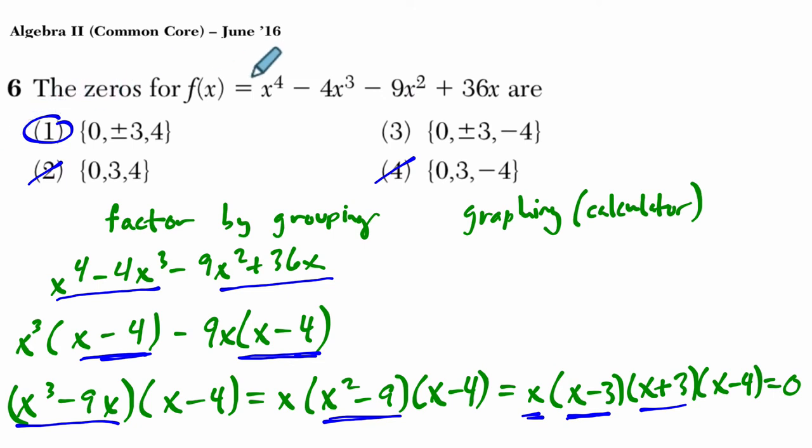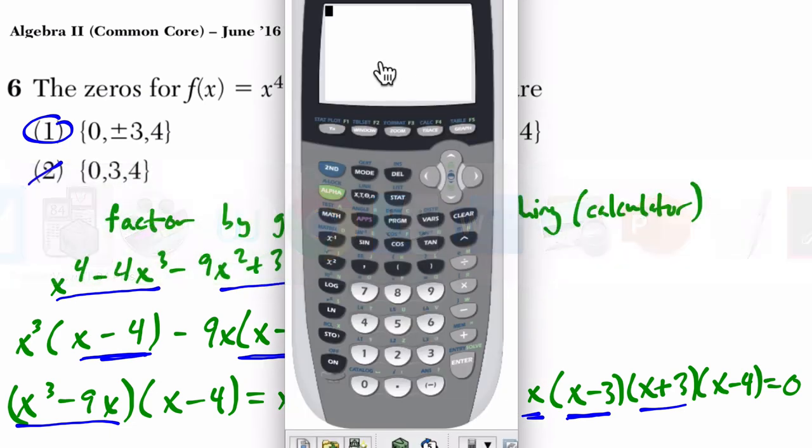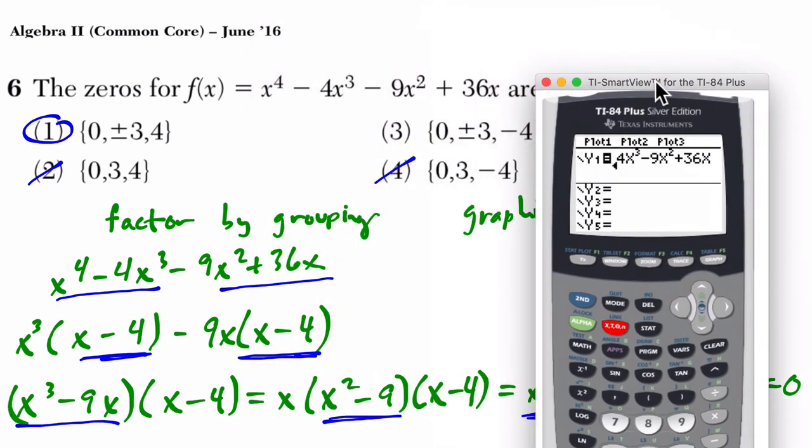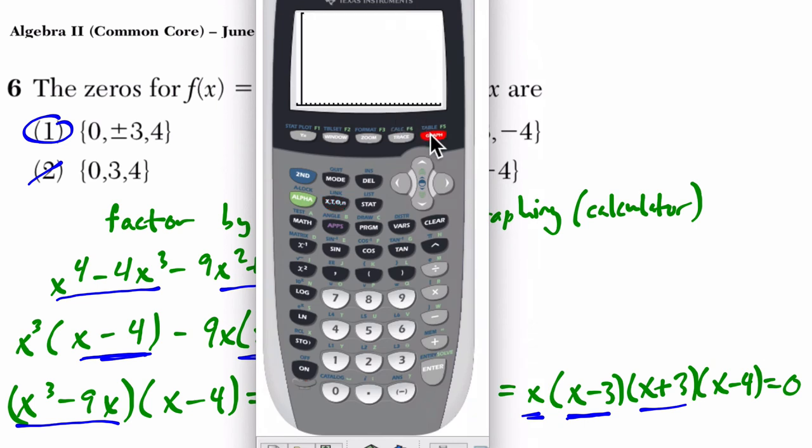Now, let's just say I've definitely seen problems where the algebraic approach would be very unreasonable. So another approach is to use the graphing calculator. And what we want to do here, I want to clear up some old stuff, is just enter in the polynomial. So that was x to the 4th, power of 4, minus 4x to the power of 3, minus 9x squared. We're getting there. And then plus 36x. And I think I've got it.